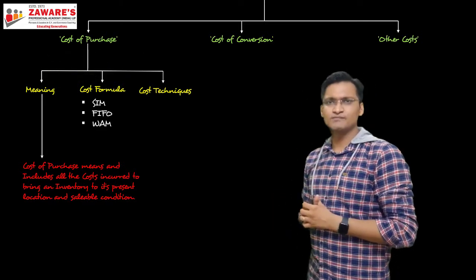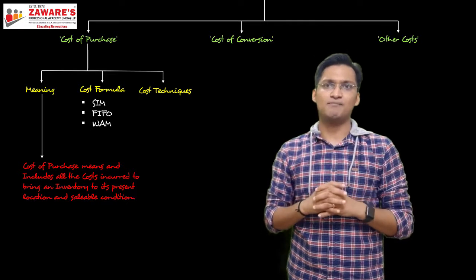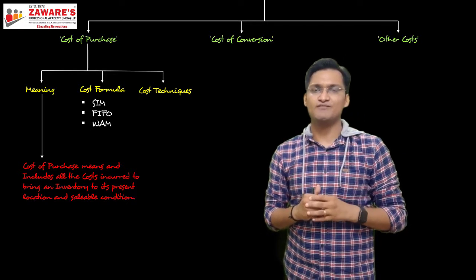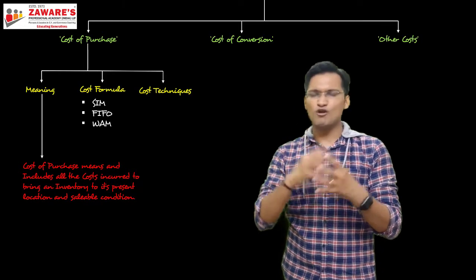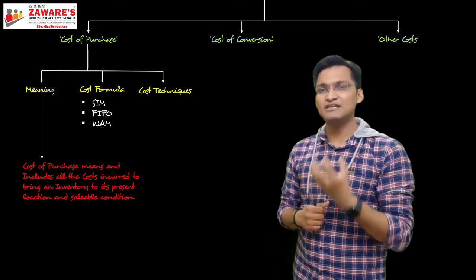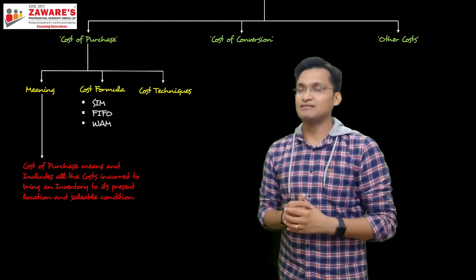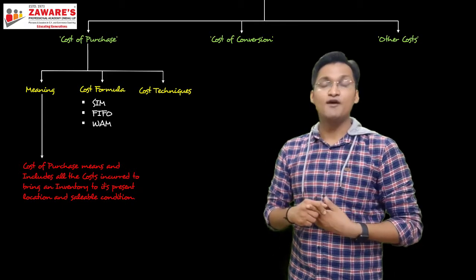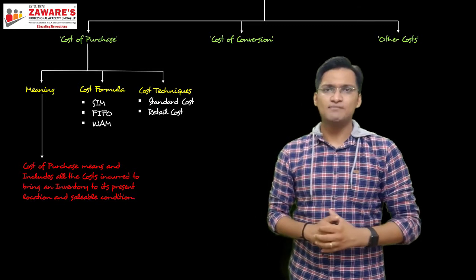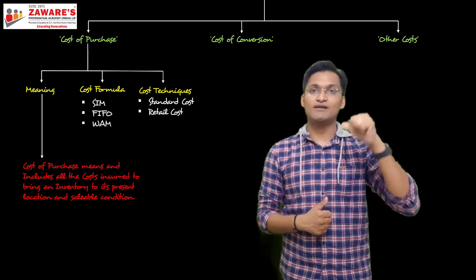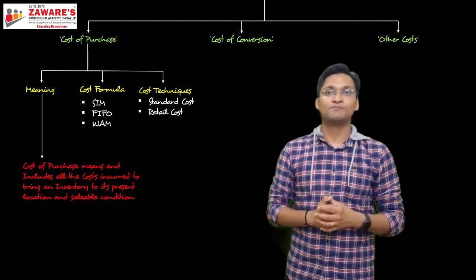Cost formula refers to methods. From CA Foundation Chapter 6 on inventory valuation, we know there are various methods: LIFO, FIFO, specific identification method, weighted average method, and others. But AS2 allows only three methods: SIM (Specific Identification Method), FIFO (First In First Out), and Weighted Average Method. Cost techniques are of two types: standard cost and retail cost — connecting to standard costing and marginal costing from Cost and Management Accounting.